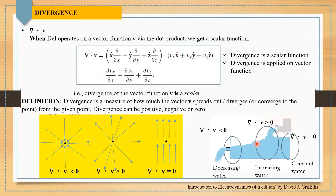So divergence at all three points is different. At the outlet point, water is decreasing so divergence v is less than zero. At the inlet region, we have more water comparatively, so divergence v is greater than zero. And because we see no difference in water level at the third point, divergence is zero there. I hope this example helps you understand the basics of divergence.